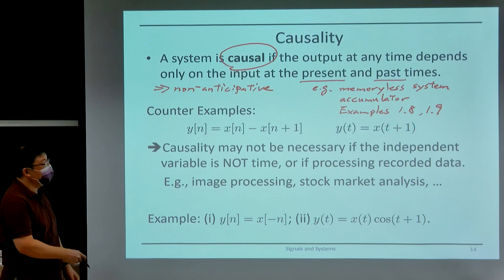Causality often holds when we're looking at real-time systems. But sometimes a signal may not be with respect to time, but instead with respect to other independent variables such as space or frequency. So if you're looking at signals that are not with respect to time, then there's no guarantee — it's not necessary for the system to be causal. Causality may not be necessary if the independent variable is not time.